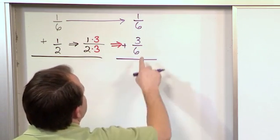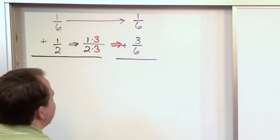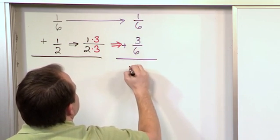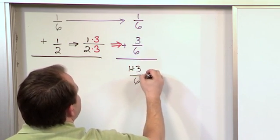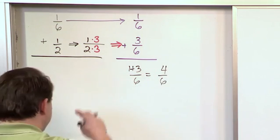Well, we know that the bottom number is a six, and that's going to be carried through to the answer, so we'll just put a six down here. And then we take one plus three, because we add fractions by adding the numerators, which would give us four-sixths. And we could circle that as our answer.